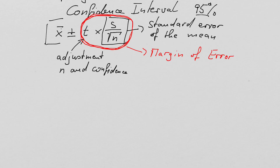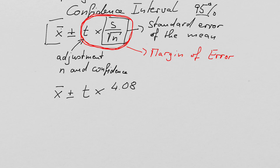Now we can very simply do this calculation. Our confidence interval is x-bar plus or minus t times the standard deviation, which was 4.08, divided by the square root of our sample size, which was 4. So we have 4.08 divided by 2, which gives us a standard error of the mean of 2.04.